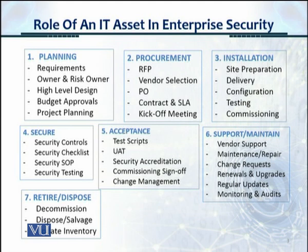Step three is installation and commissioning. You do the site preparation — it could be a data center or a rack being added. The vendor delivers the equipment, configuration is done, you test it, and commission, for example, a server in a rack in the data center. Step four is security controls: a security checklist is developed, you develop an SOP, ensure the department handling the asset knows what to do with it, and you test the security.